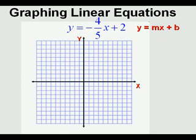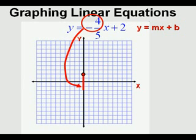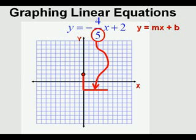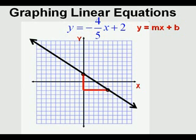Now let's look at y equals negative 4-fifths x plus 2. The b, or y-intercept, is 2, so we place the first point at y equals 2 on the y-axis. The numerator of the slope is negative 4, meaning we go down 4 from the y-intercept — rise can go up or down. Then we take the denominator of 5 and run to the right 5 units — the run always goes to the right. We mark the second point and draw through the two points. This is the graph of y equals negative 4-fifths x plus 2.